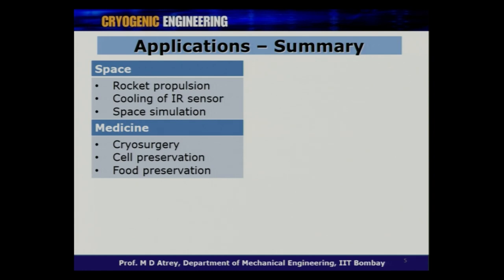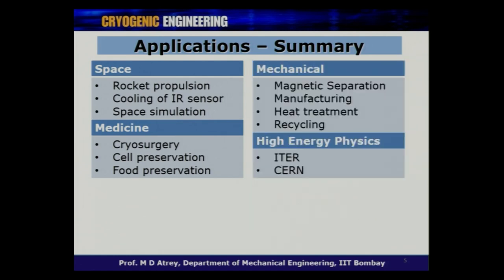One major application of cryogenics is the cryogenic engine, which is space-related. We are working closely with ISRO on rocket propulsion, also on cooling of IR detectors and infrared sensors. We are also working on cryosurgery, cell preservation, and food preservation — one PhD student is working on freezing cancerous cells, especially for breast cancer. Then there are mechanical manufacturing, heat treatment, and recycling applications.